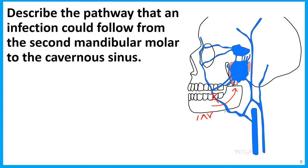Then where does that inferior alveolar vein drain into? That'll be into the pterygoid venous plexus — I'll never call it the PVP, but I'm writing it that way so you don't have to watch me write all parts of that word. Then there could be a communication here through the emissary veins. The emissary veins then would lead to the cavernous sinus, which would be the spot where now we have an infection that has spread from a tooth up into the cranial cavity.